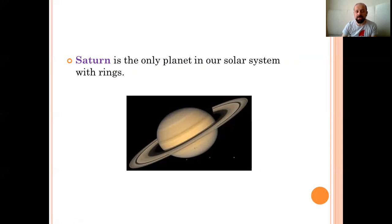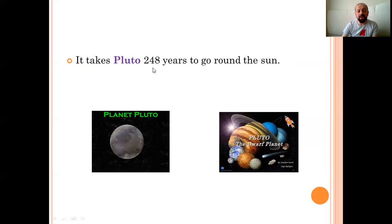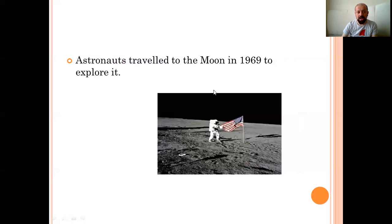Saturn is the only planet in our solar system with rings. Evet, ring, yüzük anlamına geliyor normalde. Burada da ne diyoruz? Saturn, Güneş sistemindeki halkası olan tek gezegendir. Halka dediğimizde zaten yine çekim kuvveti yüzünden taş, kaya, astroid parçaları. Neptune is the farthest planet from the sun. Yes, Neptune, Güneş'e en uzak olan gezegen. It is the coldest planet. Ve en soğuk olanda. Güneş'e en uzak olduğu için en soğuk olanda. It takes Pluto 248 years to go around the sun. Pluto'nun Güneş sisteminde tur atması 248 yılı buluyor. Astronauts traveled to the moon in 1969 to explore it. Astronautlar ayı keşfedebilmek için 1969 yılında oraya seyahat ettiler diyoruz.